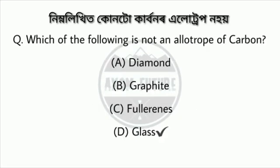Question 12. Which of the following is not an allotrope of carbon?